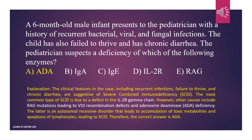Explanation: The clinical features in the case, including recurrent infections, failure to thrive, and chronic diarrhea, are suggestive of severe combined immunodeficiency. The most common type of SCID is due to a defect in the IL-2R gamma chain. However, other causes include RAG mutations leading to VDJ recombination defects and adenosine deaminase deficiency. The latter is an autosomal recessive disorder that leads to accumulation of toxic metabolites and apoptosis of lymphocytes, leading to SCID. Therefore, the correct answer is ADA.